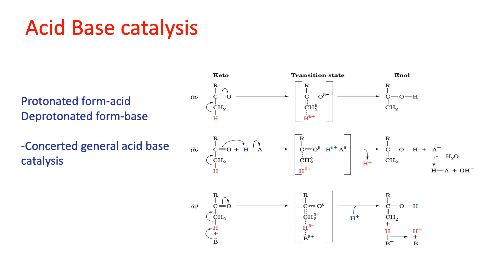The same reaction can be catalyzed by base B, where the base extracts a proton from the keto form, converting it into a transition state with lesser energy, and the reaction takes place at higher speed. In some cases both acid and base catalysis take place simultaneously, known as concerted general acid-base catalysis. This generally lowers the free energy of the transition state, can activate nucleophiles, and stabilizes charged groups. A typical example is ribonuclease A.